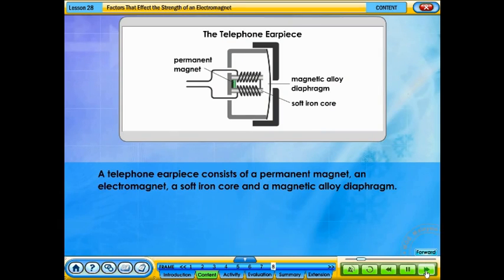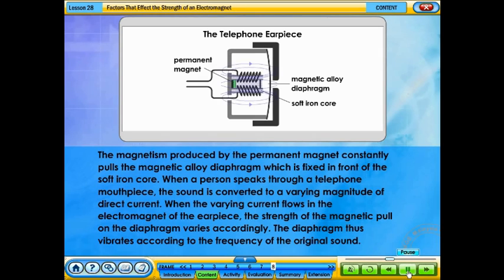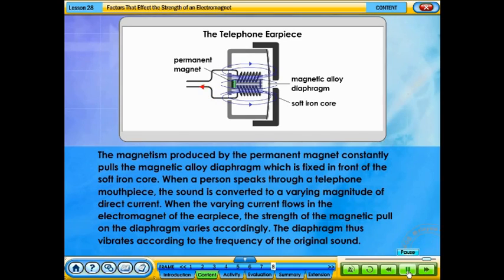A telephone earpiece consists of a permanent magnet, an electromagnet, a soft iron core, and a magnetic alloy diaphragm. The magnetism of the permanent magnet constantly pulls the magnetic alloy diaphragm, which is fixed in front of the soft iron core. When a person speaks through a telephone mouthpiece, the sound is converted to a varying magnitude of direct current. When the varying current flows in the electromagnet of the earpiece, the strength of the magnetic pull on the diaphragm varies accordingly. The diaphragm thus vibrates according to the frequency of the original sound.